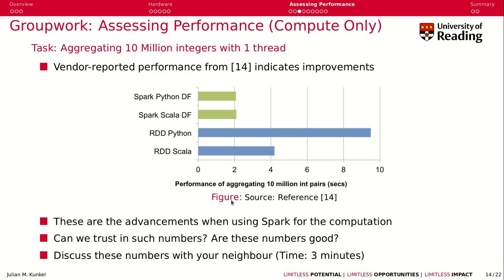I show you some performance measures from a vendor, reporting the improvement made with a new version and comparing Spark with Python and Scala. This job aggregates 10 million integers using one thread. Using RDDs in Python takes 9 seconds; using RDDs in Scala takes 4 seconds; using DataFrames, which is the Spark 2 API, you get 2 seconds — about 4 times faster than Python with RDDs. So the question is: can we trust such numbers? Are these numbers really good?